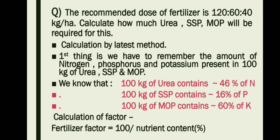We have to remember the amount of nitrogen, phosphorus, and potassium present in 100 kg of urea, SSP, and MOP. 100 kg of urea contains 46% nitrogen, 100 kg of SSP contains 16% phosphorus, and 100 kg of MOP contains 60% potassium.